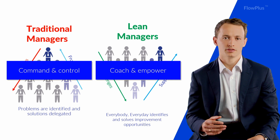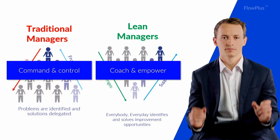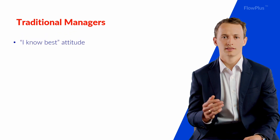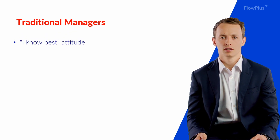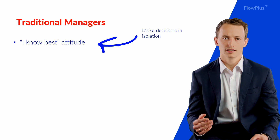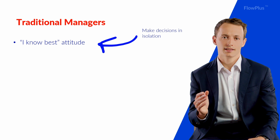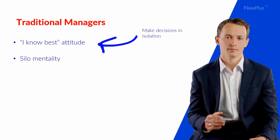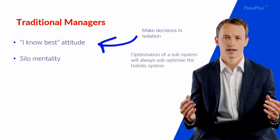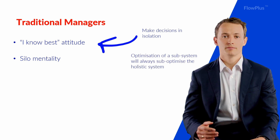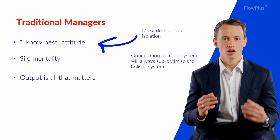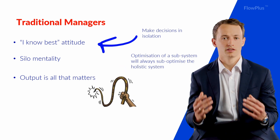Let's look at the role of managers in the two different types of organisation. Traditional managers take an 'I know best' attitude where they make decisions by themselves in isolation without consulting and involving the people that are actually doing the process every day. They take a narrow tunnel vision view and silo mentality, making decisions only thinking about the immediate impact on them and their team. Just like mass production, managers would be very results and output focused, cracking the whip and taking a command and control approach.